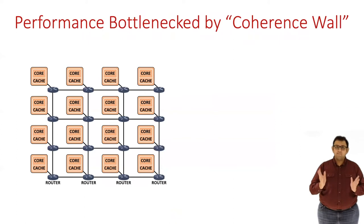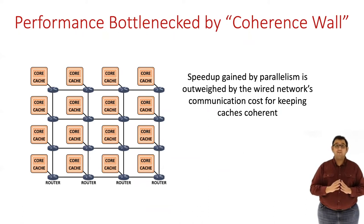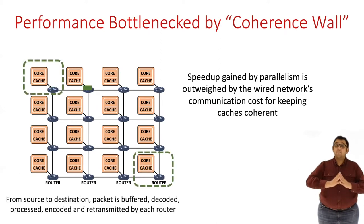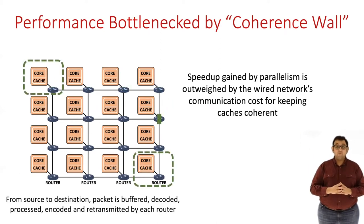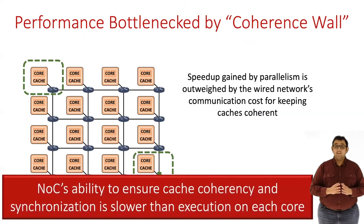What this means is that after a certain point, the speedup gains from parallelization are negated by the communication latency of the wired network. As the network becomes bigger, the number of hops between distant cores increases, which leads to very large latencies. As a result, the network becomes the bottleneck.